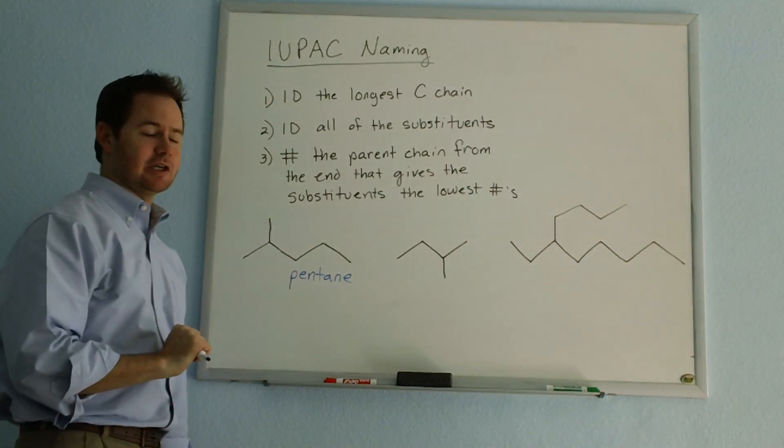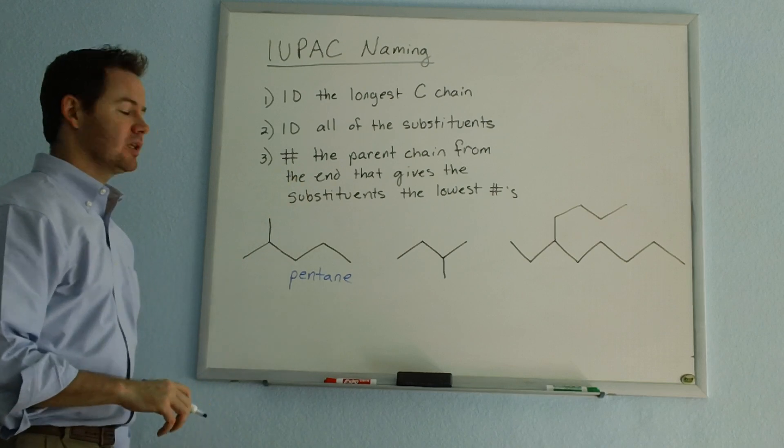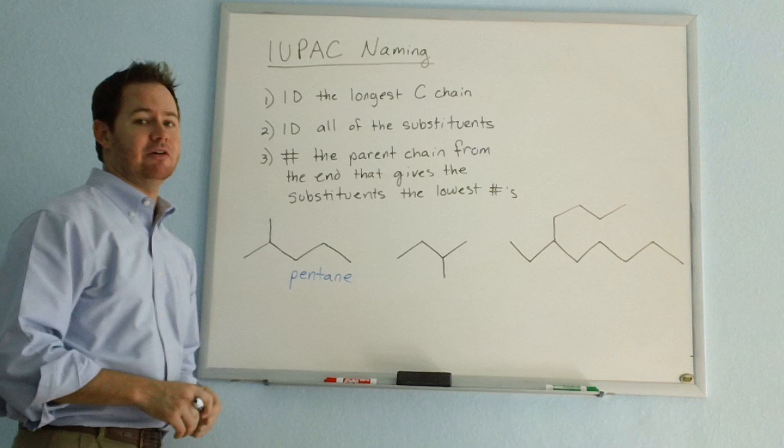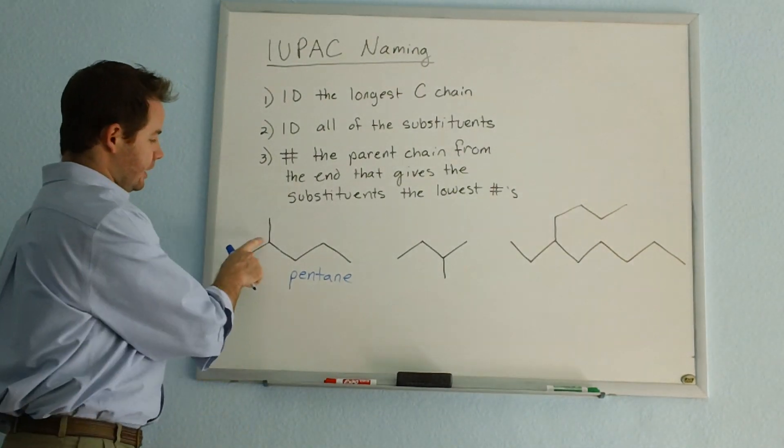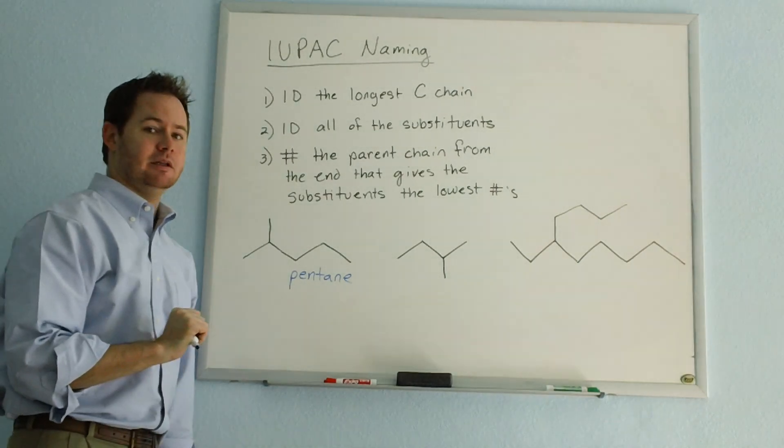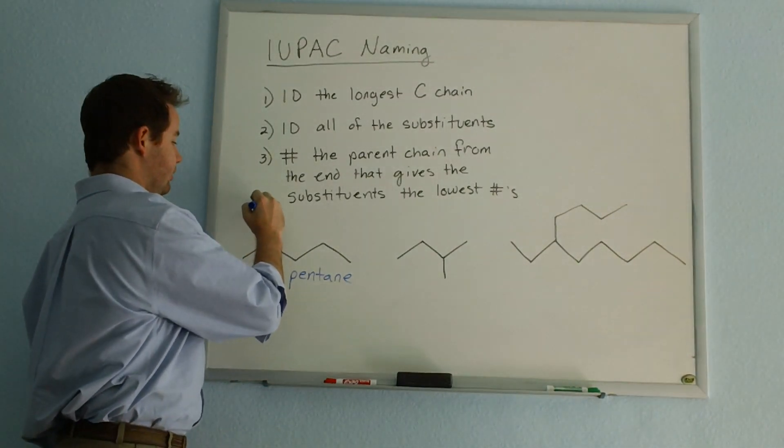Now let's take a look at our second rule. Identify all of the substituents. Substituents are just the things that are branching off of your parent chain. And in this case, we only have one branch, this group right here, which has one carbon in it. And the prefix for one is meth, so this will be a methyl group.